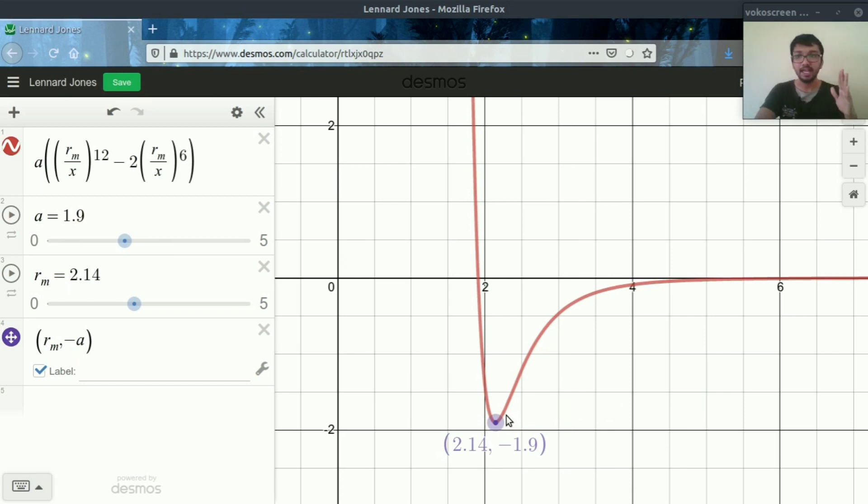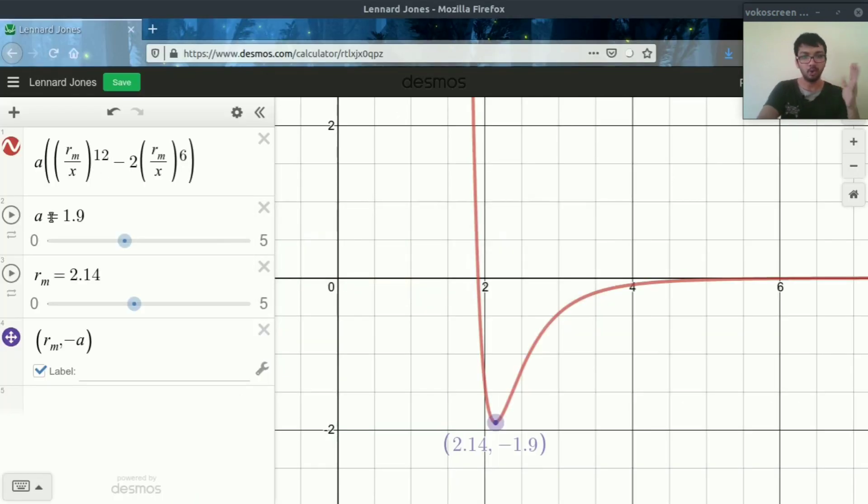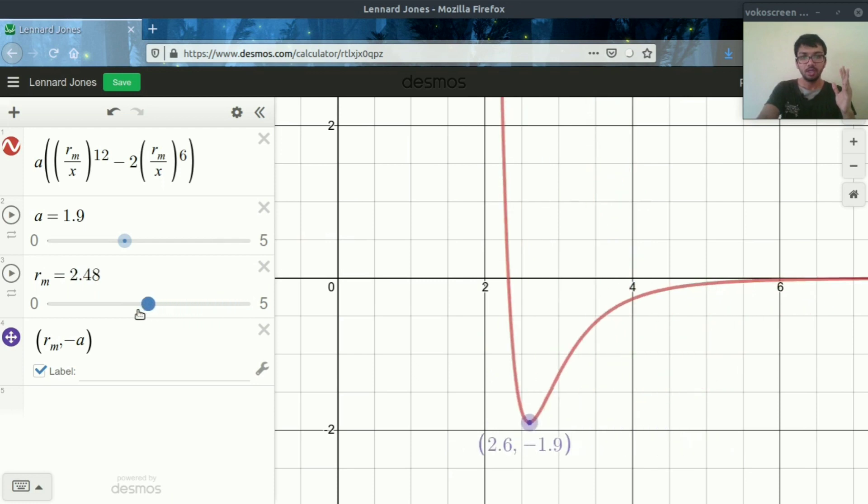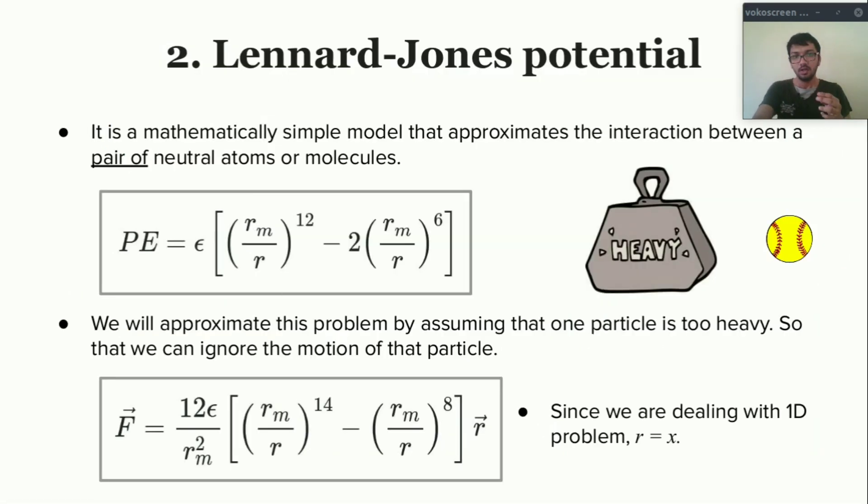Now let's focus on this RM term. Let's vary its value. As we can see, if we vary the value of RM, the position of minima is changing. So this RM acts as a shift. Yes, epsilon is the strength of potential and RM is the shift of minima.